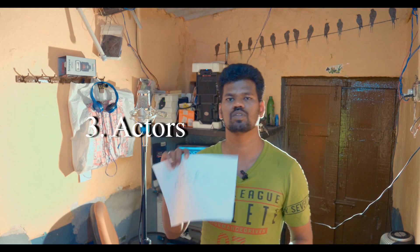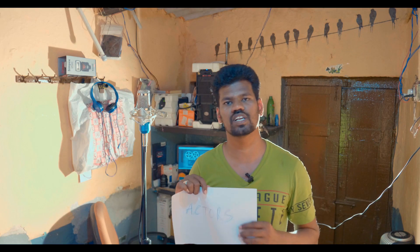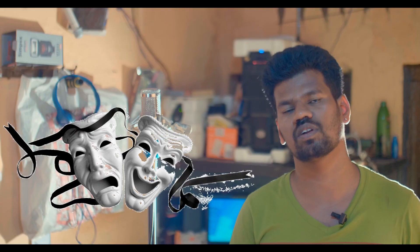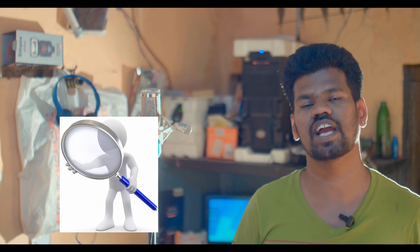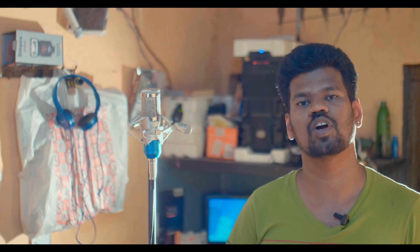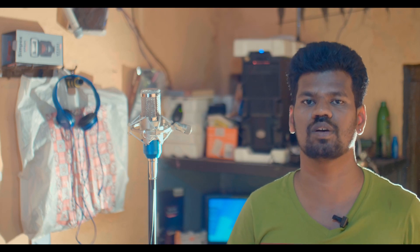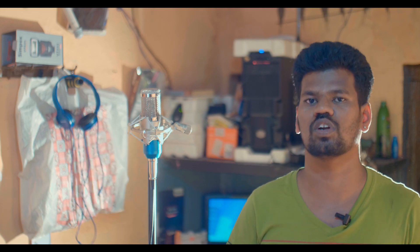The third important thing is actors. Actors are the most important thing. If you are making a first short film, you will identify your friends as actors. If you are acting yourself, you can also do it for your first short film. It will be better to work with people you know.